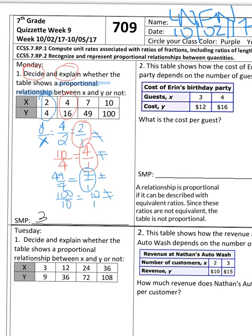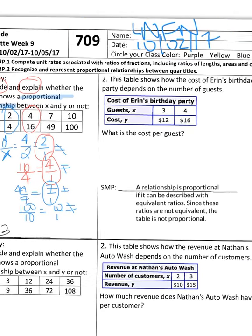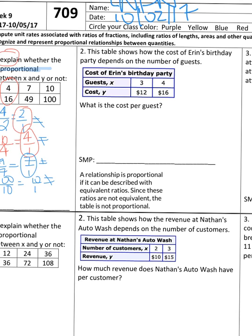Alright, number 2 says, This table shows how the cost of Aaron's birthday party depends on the number of guests. Then it gives you the table, and it says, What is the cost per guest?